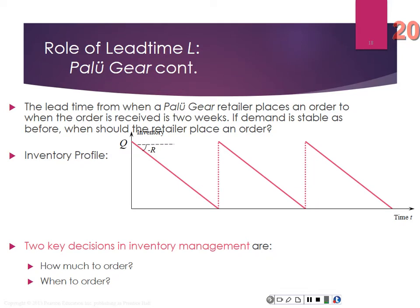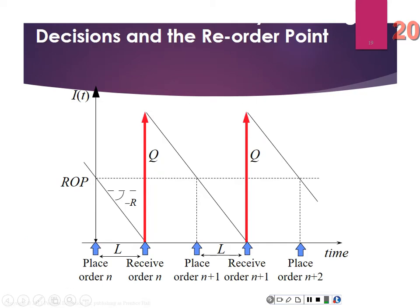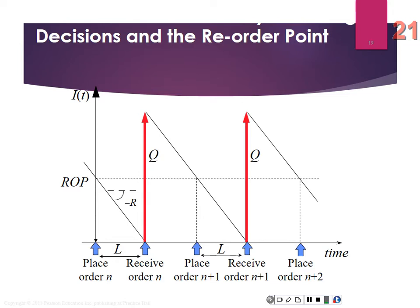The sawtooth diagram shows how much to order and when to order it. If demand per day is 10 units and lead time is two days, your reorder point is 20 units — demand per day times lead time. That's how you get to your reorder point. If lead time is greater than the time between orders, there will be more than one order outstanding, and you'll need to adjust your inventory position.